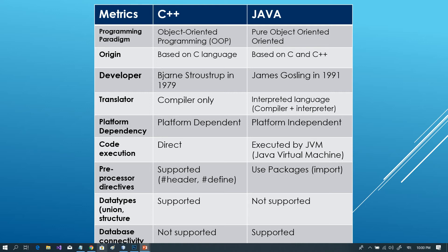There is a lot of history to cover. Now we have three topics. The first topic is the translator. In C++, only a compiler is used — no interpreter, no assembler, just the compiler.